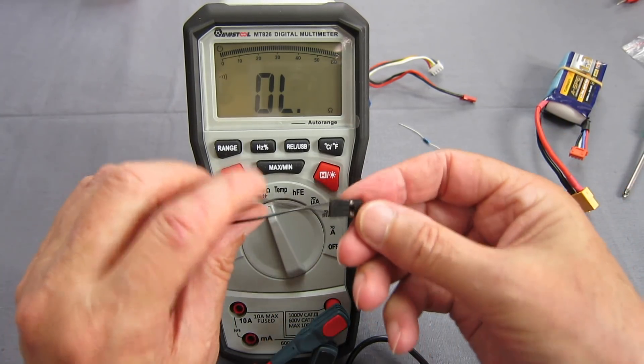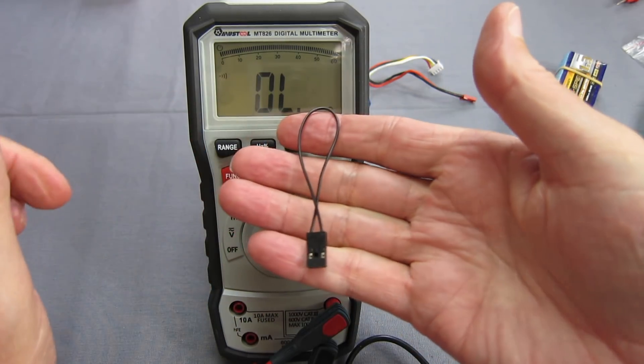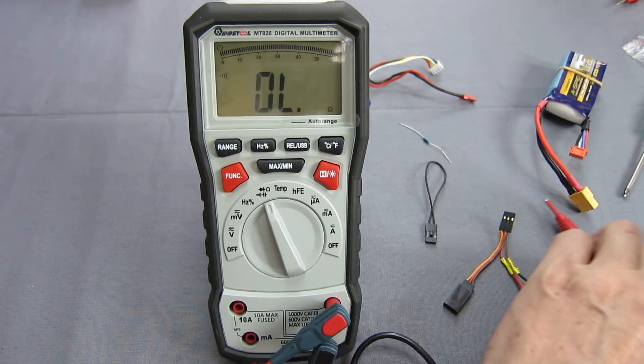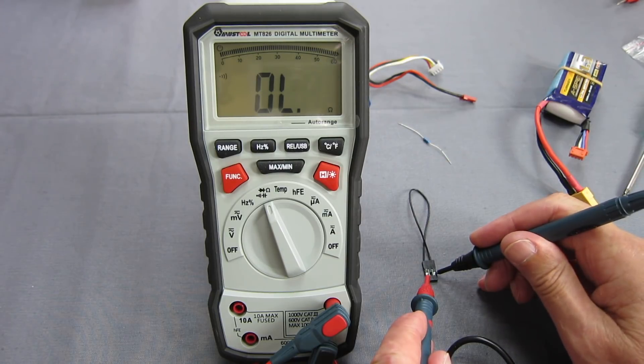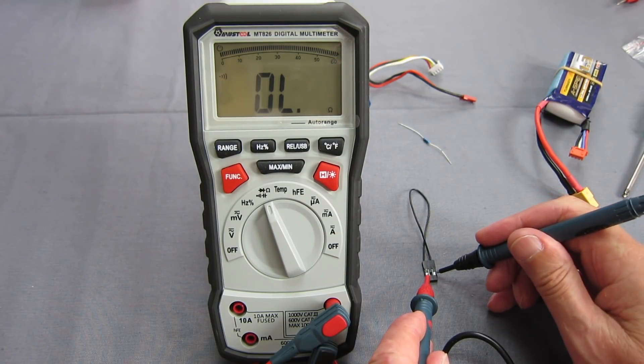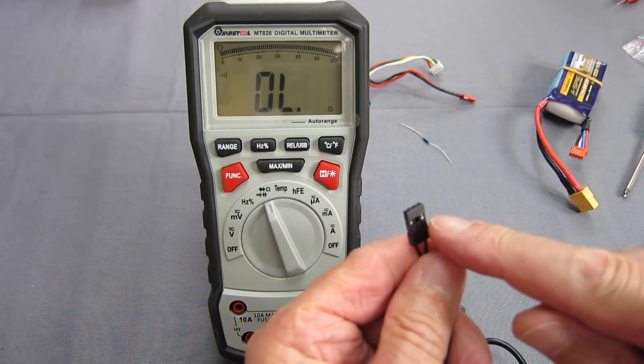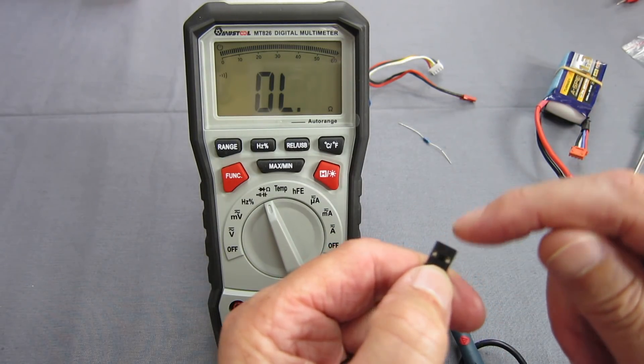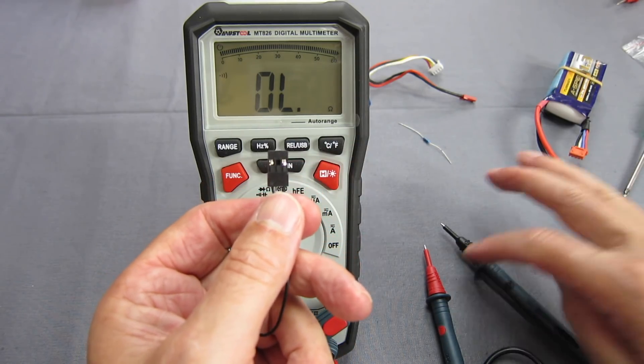Oh I know something else. If you ever wondered what a bind plug does. Let's have a look. So there you go. You can see a bind plug is just is just a short. All it does is short the outer pins. That'll be the signal wire to ground and that allows you to bind your receiver.